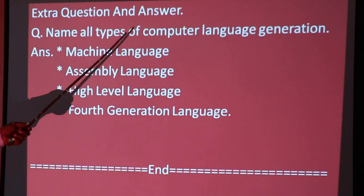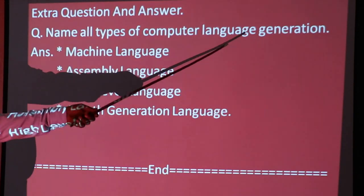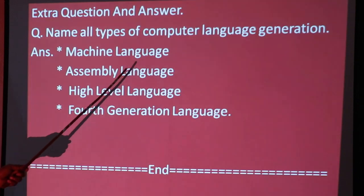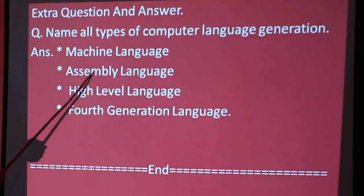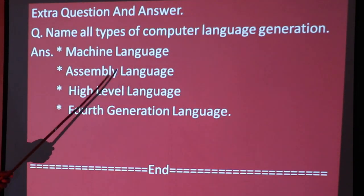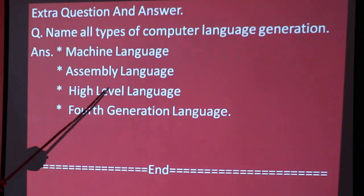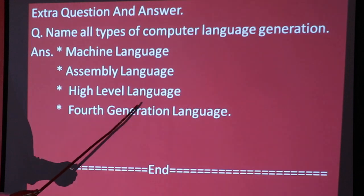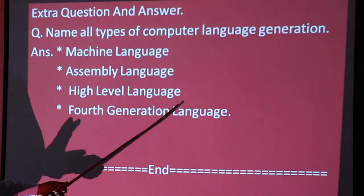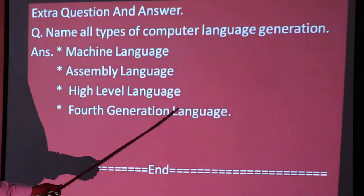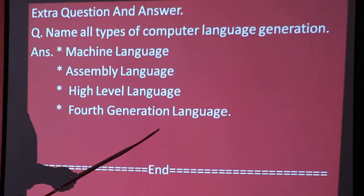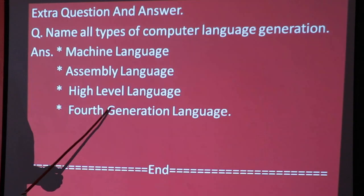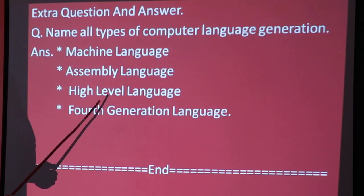Name all types of computer language generations. First is machine language, next is assembly language, then high level language, and finally fourth generation language. Your Chapter 1 is now completed. You can download the questions and answers and note them in your copy.